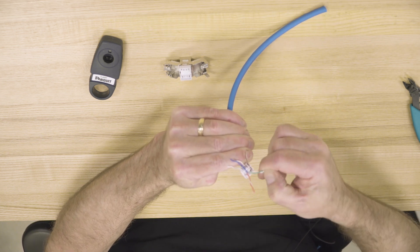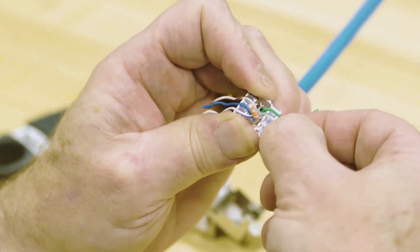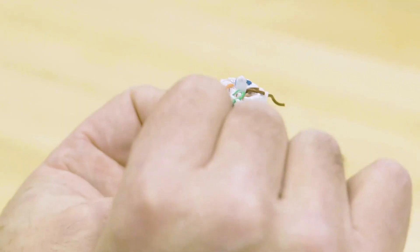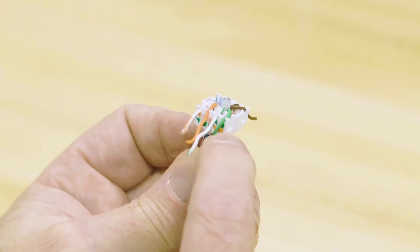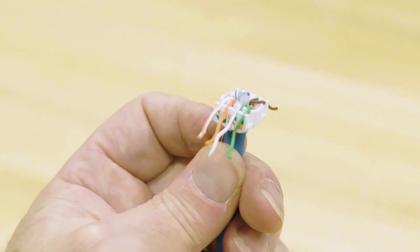Untwist the conductors, set the solid one, set the white one, untwist the conductors. Verifying: green solid, green white, orange solid, orange white.